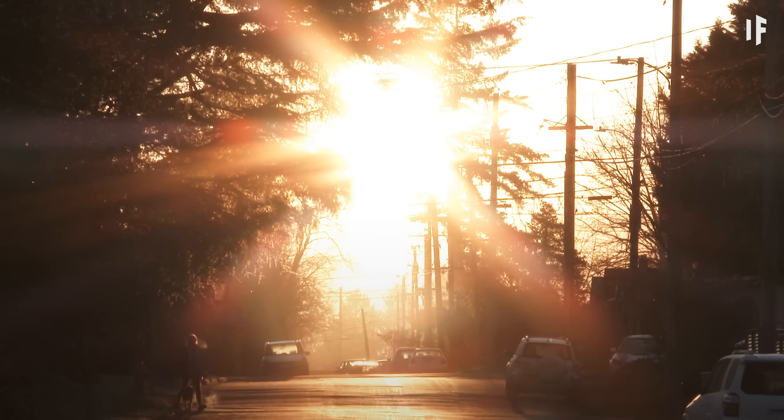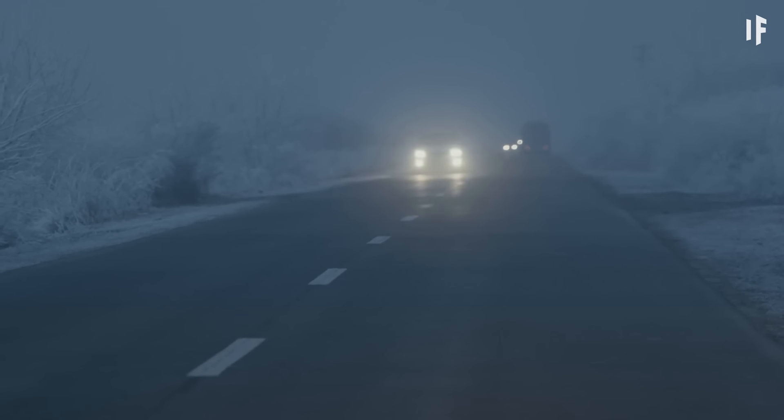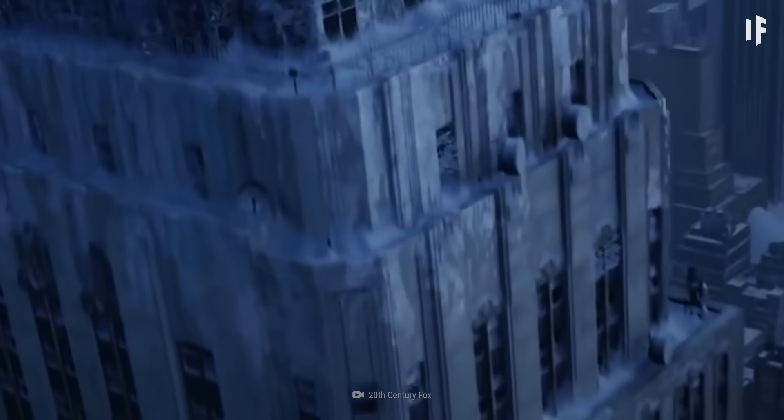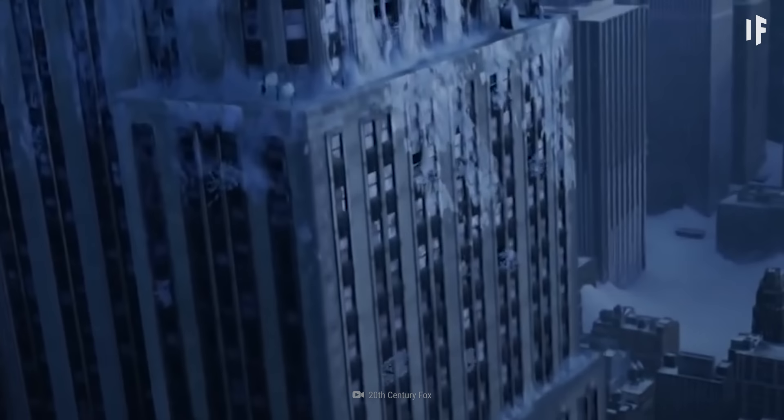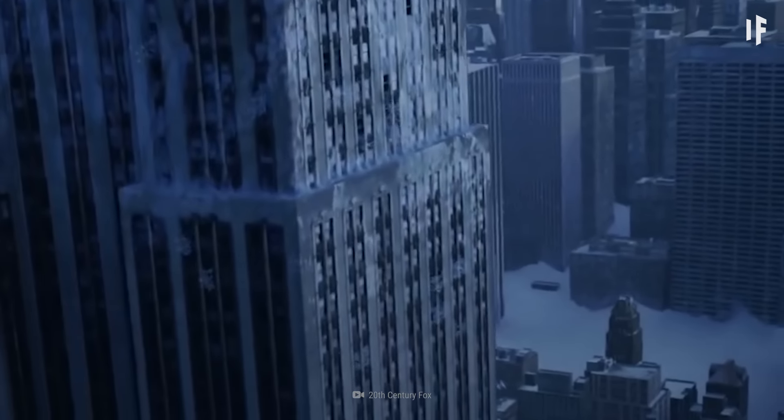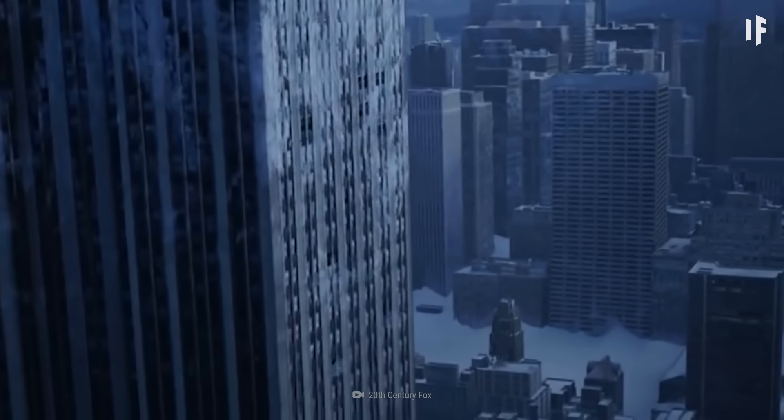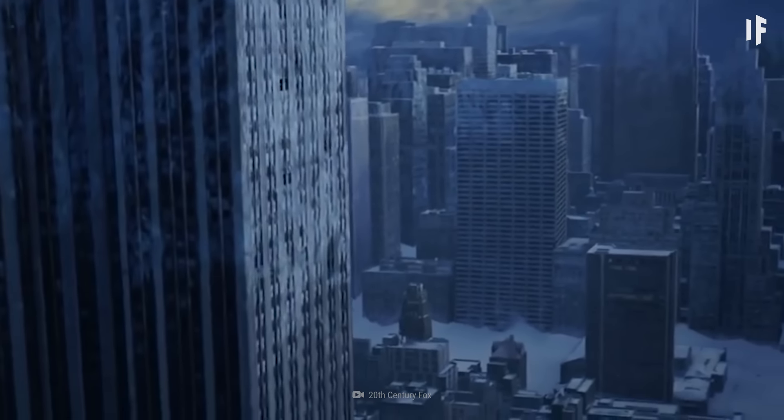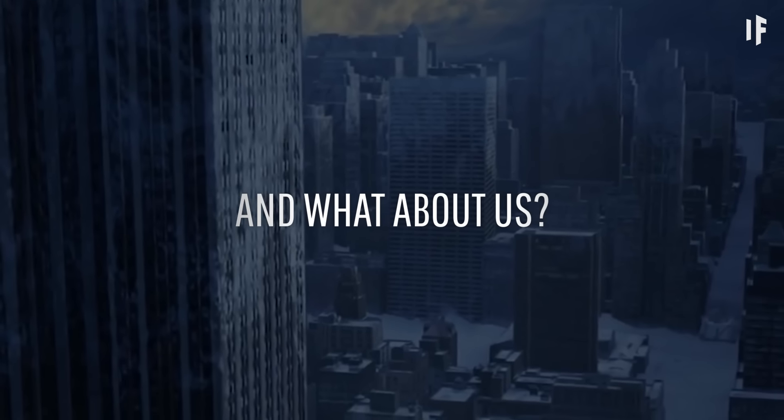But with no Sun to give us warmth and light, the Earth would turn into a frozen world. After just one year, Earth's temperature would drop below minus 73 degrees. Most of the plants and animals would be dead long before that. And what about us humans?